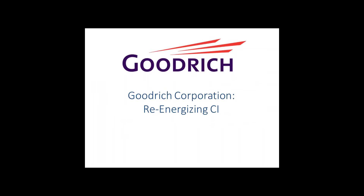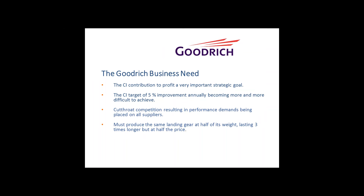Here's the second example — the Goodrich Corporation. This was a project to understand, learn, and execute. The idea was how do we re-energize our program. There has to be a business need, and there was one at Goodrich. The CI contribution has to support a really important strategic goal — a target of 5% improvement annually was part of the strategy, and it was becoming more and more difficult to achieve. A lot of competition and more and more performance demands were being placed on suppliers like Goodrich.